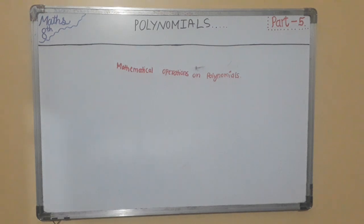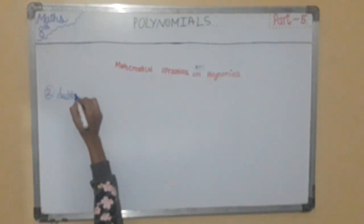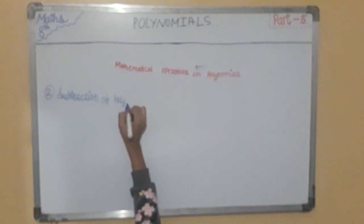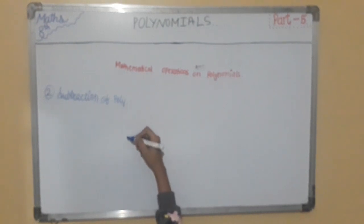In this part we will continue the mathematical operations on polynomials and start with the second, that is subtraction of polynomials. Similar to addition of polynomials, we can subtract polynomials using two methods, but note that in subtraction the signs of the polynomial to be subtracted are changed and added to the other polynomial.